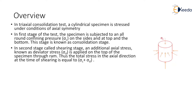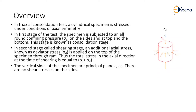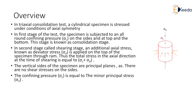In the second stage, called the shearing stage, an additional axial stress known as deviator stress sigma d is applied on the top and the bottom of the specimen through a ram. Thus the total stress in the axial direction at the time of shearing is equal to sigma c plus sigma d. The vertical sides of the specimen are principal planes as there are no shear stresses on the sides. The confining pressure sigma c is equal to the minor principal stress.